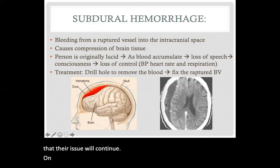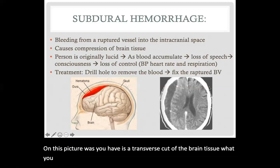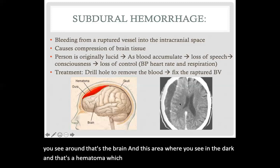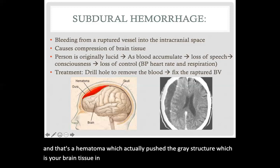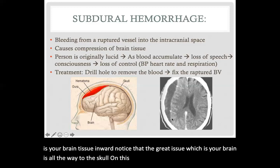In this picture, we have a transverse cut of the brain tissue. What you see around it is the brain, and the dark area is the hematoma, which has actually pushed the gray structure — your brain tissue — inward. Notice that the gray tissue, which is your brain, is all the way to the skull on one side; however, on the other side you have this dark spot where the hematoma is compressing it.